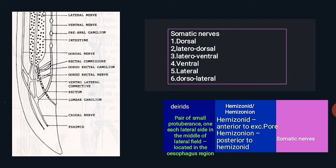Regarding somatic nerves: the nerves which run longitudinally in the hypodermis are called somatic nerves. There are different somatic nerves named based upon their position: dorsal somatic nerve, lateral dorsal somatic nerve, lateral ventral nerve, ventral nerve, lateral nerve, and dorsal lateral nerve.